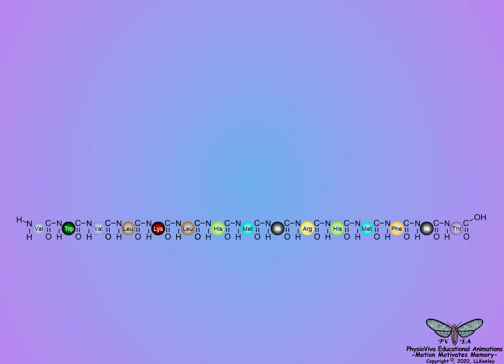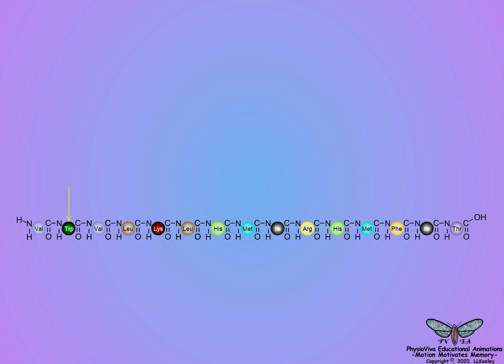Amino acid chains are highly variable in size, but all start with a free carboxyl group called the C-terminus and end with a free amino group called the N-terminus. For simplicity, our illustration of digestion will focus on a peptide chain of 15 amino acids, comprised of only the 10 essential amino acids, identified using colored balls to depict their R-groups and labeled with their three-letter designation.